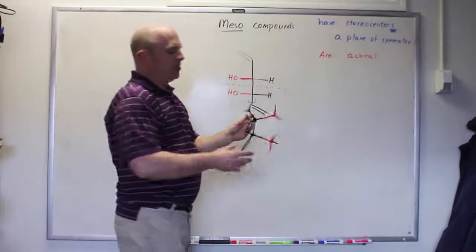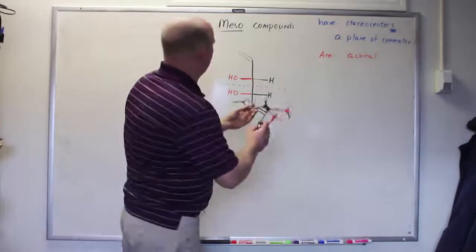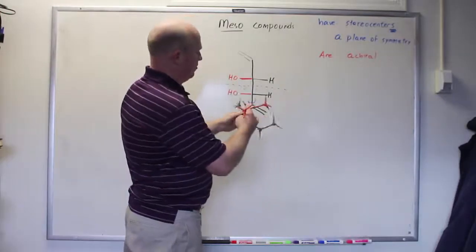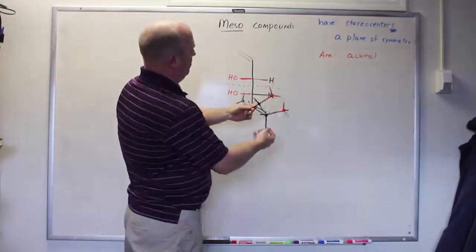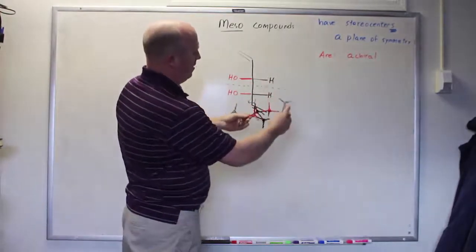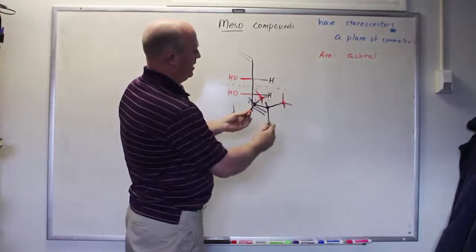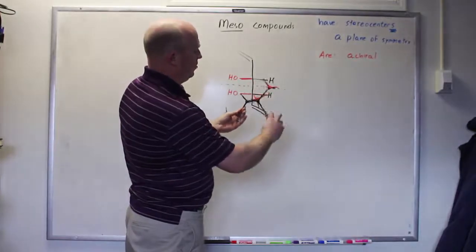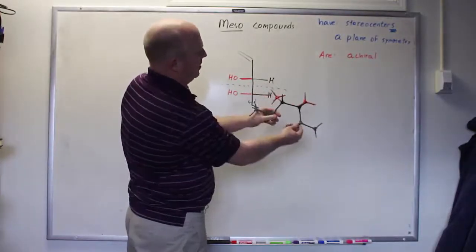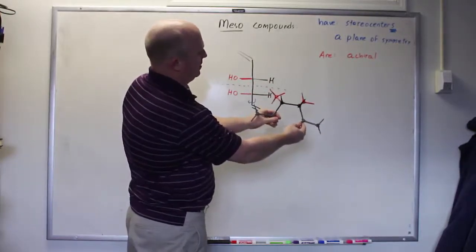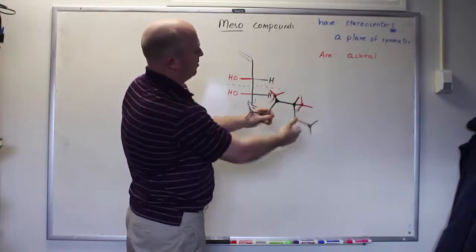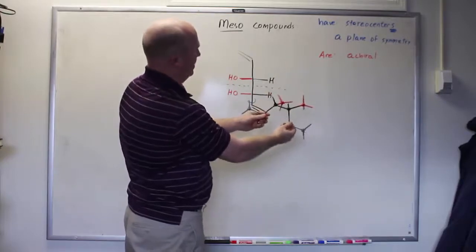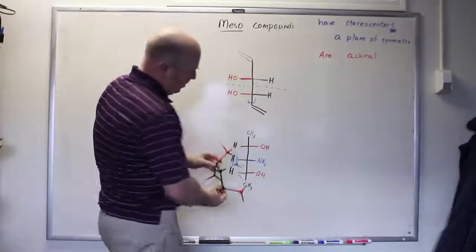The Fischer projection for this molecule looks essentially like this, but then I can rotate it to show you that it has a plane of symmetry. And there it is — there's a plane of symmetry in this molecule. Therefore, this molecule is achiral.